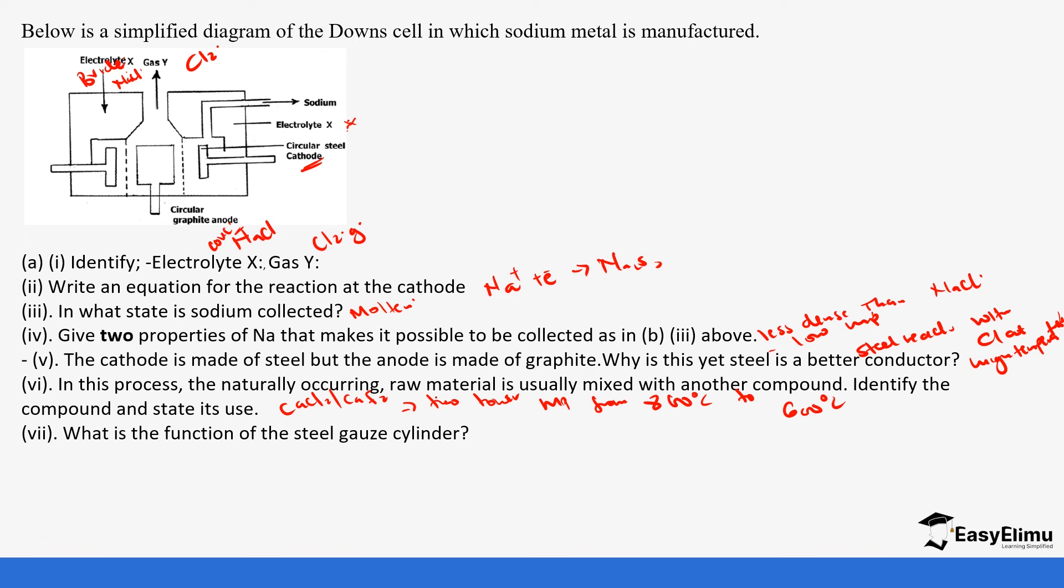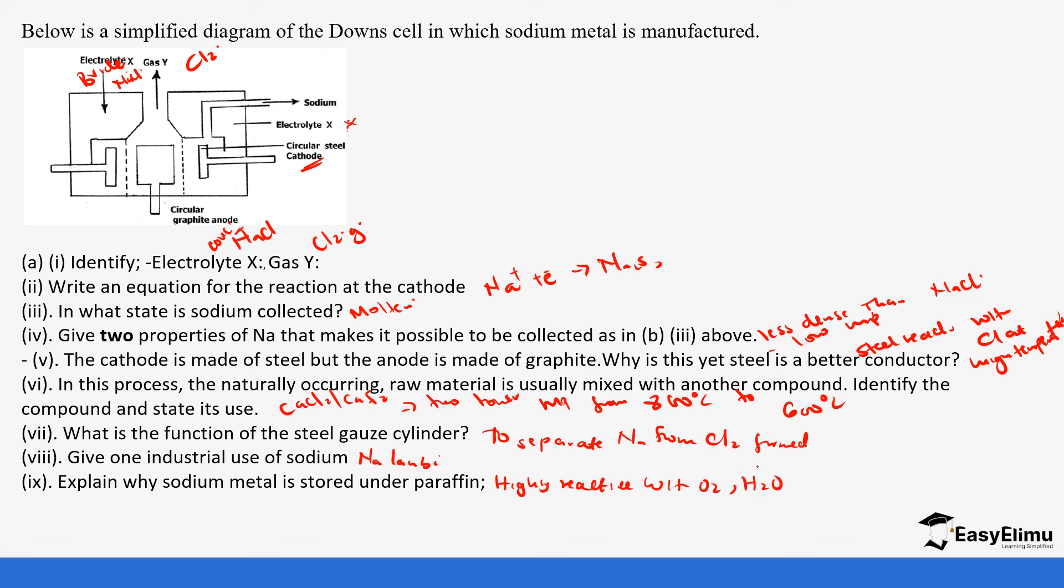What's the function of steel wire gate? To separate sodium from chlorine because both of them would react. One use of sodium: it is filled in sodium vapour lamps that are used for street lighting. Explain why sodium metal is stored under paraffin: because sodium is highly reactive with oxygen and also moisture in the atmosphere.